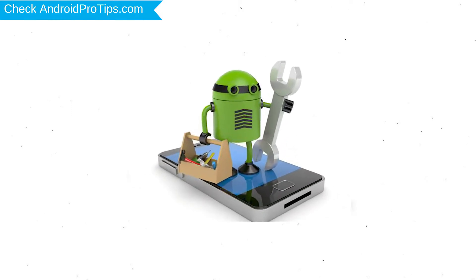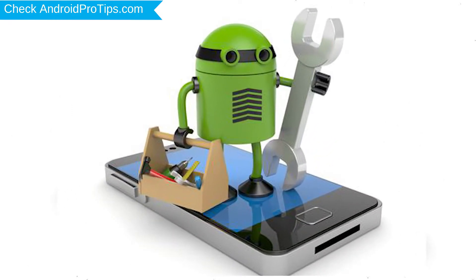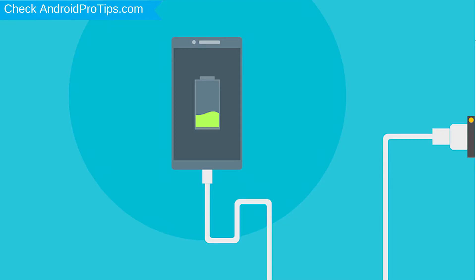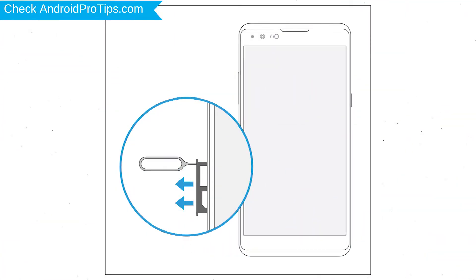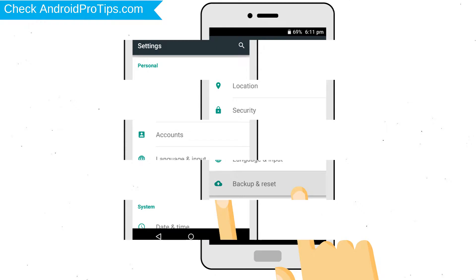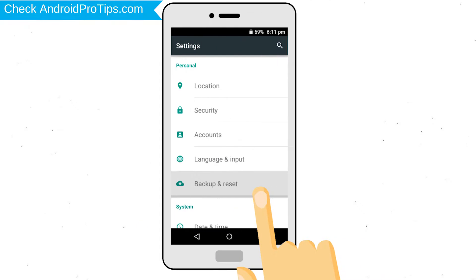Before resetting your mobile, your mobile battery must be above 50%. Remove SD cards and SIMs. Back up your Android mobile data if possible.